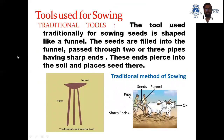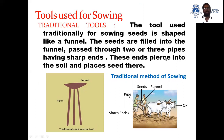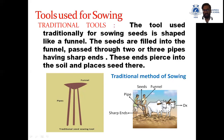The tools used for sowing: the first is the traditional tool. The tool used for sowing seeds is shaped like a funnel. The seeds are filled into the funnel and passed through two or three pipes having sharp ends. These ends pierce into the soil and place seeds there.